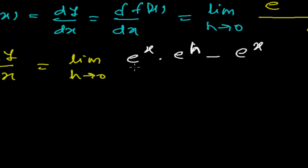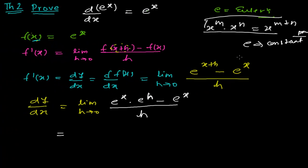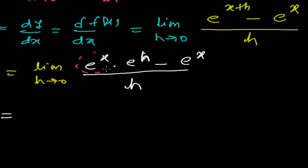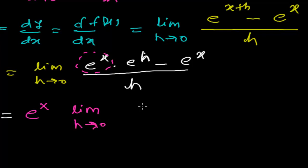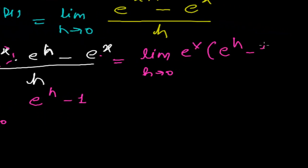So we get: limit h tends to 0 of [e to the power x times e to the power h minus e to the power x], all divided by h. Now, e to the power x is a constant. I'm taking e to the power x as a common factor, so I'm left with: e to the power x times the limit h tends to 0 of [e to the power h minus 1] divided by h.